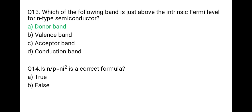Question 15: Is N divided by P equals ni squared a correct formula? No, it is wrong. The correct formula is N times P equals ni squared — this is the mass action law. In an intrinsic semiconductor, the number of electrons equals the number of holes, equal to ni, the intrinsic carrier concentration. So N times P equals ni squared is the correct formula; N divided by P equals ni squared is a wrong formula.